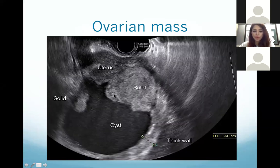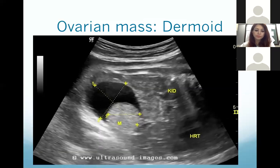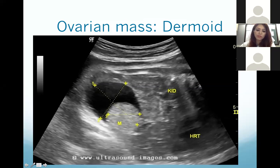This is an image showing an ovarian mass with both solid and cystic components. As mentioned, any fluid seen on ultrasound is black, so this is the cystic component of the mass, and this is the solid component — making this a complex solid-cystic mass. This other image of a solid-cystic mass is a dermoid, because you can see a fat density signal: the white area is fat and the black area is fluid.